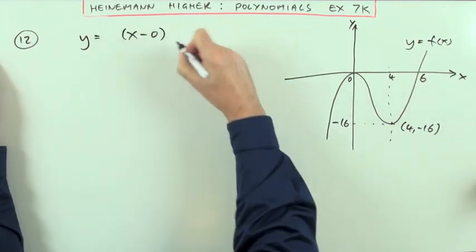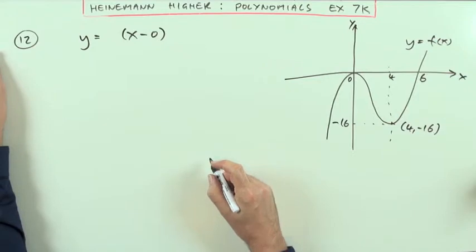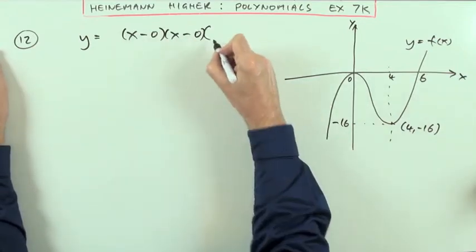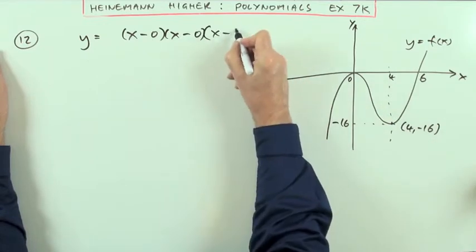Now, you could either write x minus zero, x minus zero. Well, I've just started so well. Or you could just write x times x. And the other one's going to be at x minus 6.